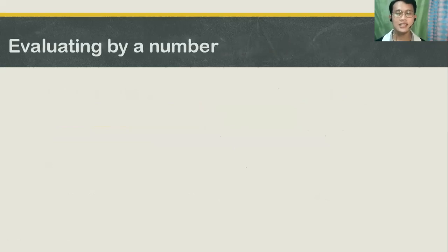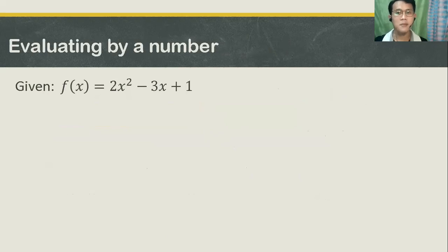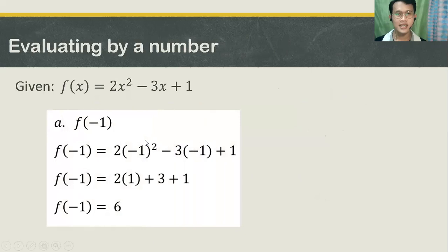Okay, let's try to have this first example — evaluating by a number. Given the function f of x, which is equal to 2x squared minus 3x plus 1, we are going to find f of negative 1.